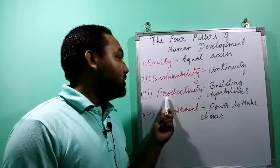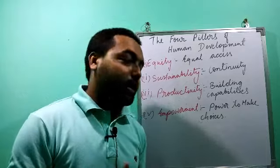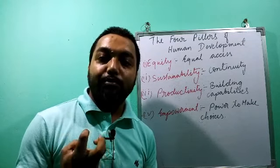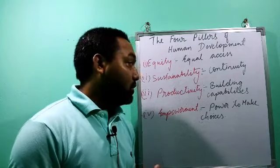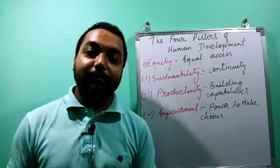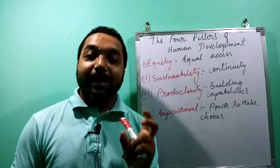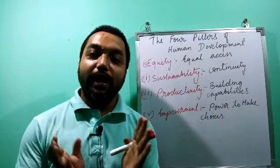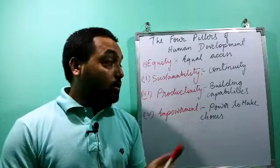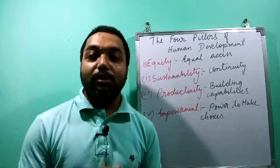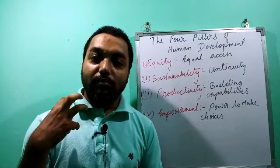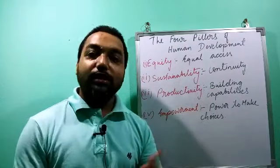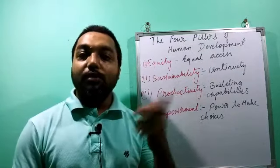The next important pillar is productivity. Here productivity does not mean agricultural productivity — it means productivity in terms of work, how people can work and produce. A population should be made productive by giving them good knowledge, developing their talents, providing good education, and skill development programs. The main wealth of a country is its population, and they should always be enriched with good knowledge, good skills, and developed technology. Only then will their productivity be good and human development will be good.